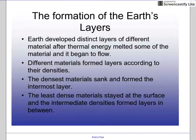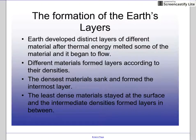So how did the layers of the Earth form? As we talked about, gravity was at work, and all those different materials were colliding together and building mass 4.6 billion years ago. It was extremely hot — it had a lot of thermal energy — and because of that the material was able to flow and move around.